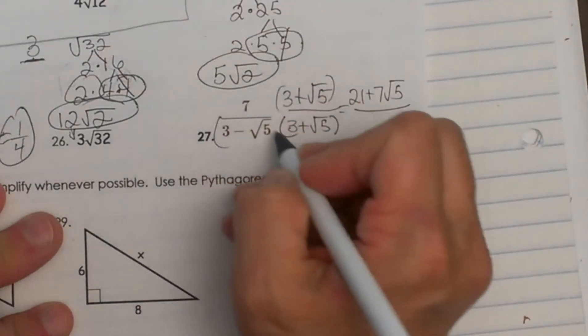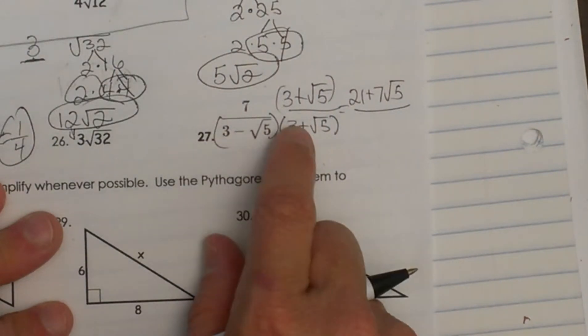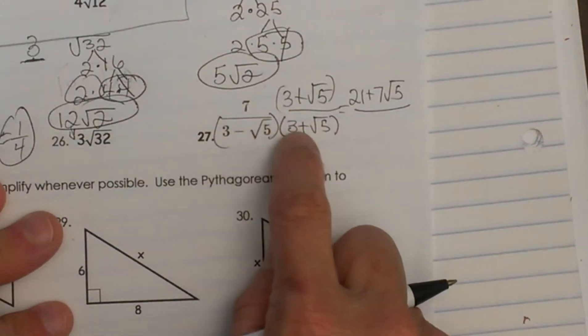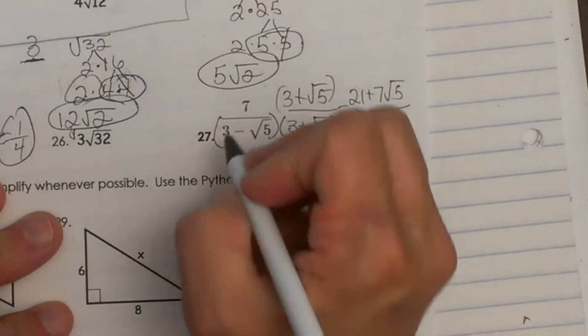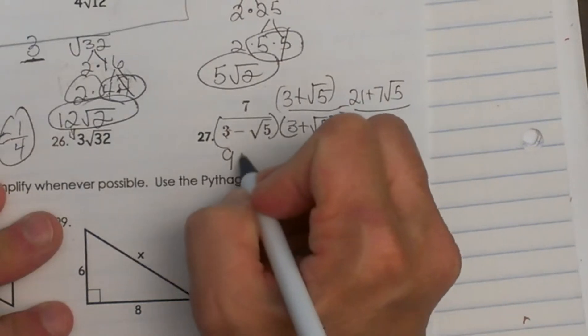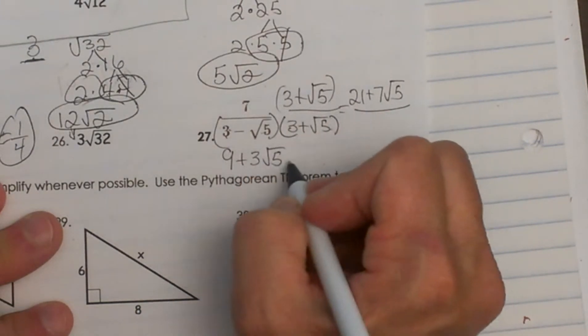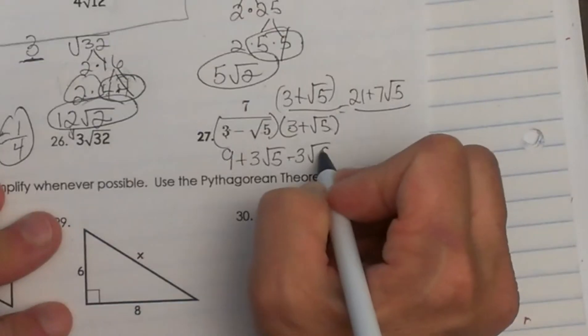Now the bottom is a little bit different, the denominator. We have to FOIL this. So we're going to do first, outer, inner, and last. So 3 times 3, that's 9. Outer is 3 times positive square root of 5, so positive 3 square root of 5. On the inside we get negative 3 square root of 5.